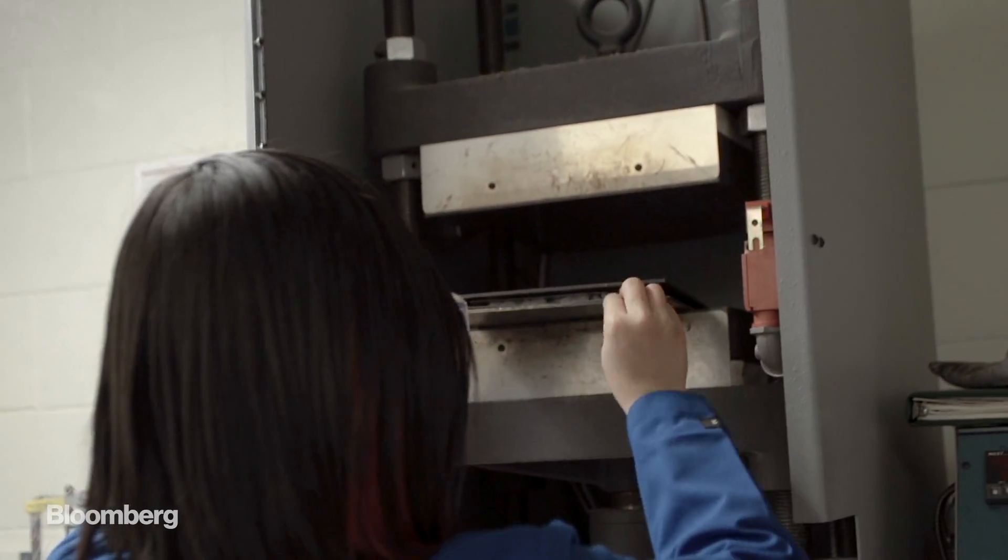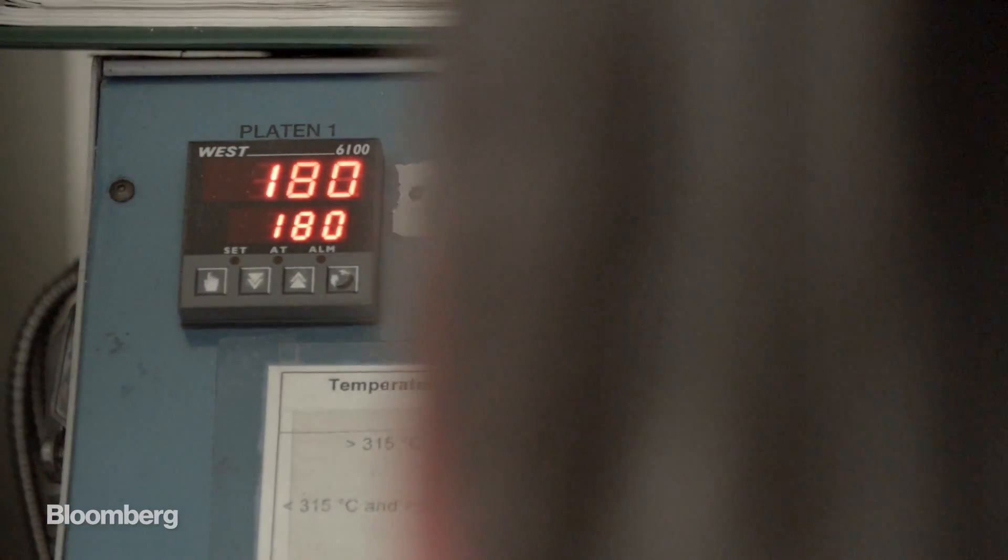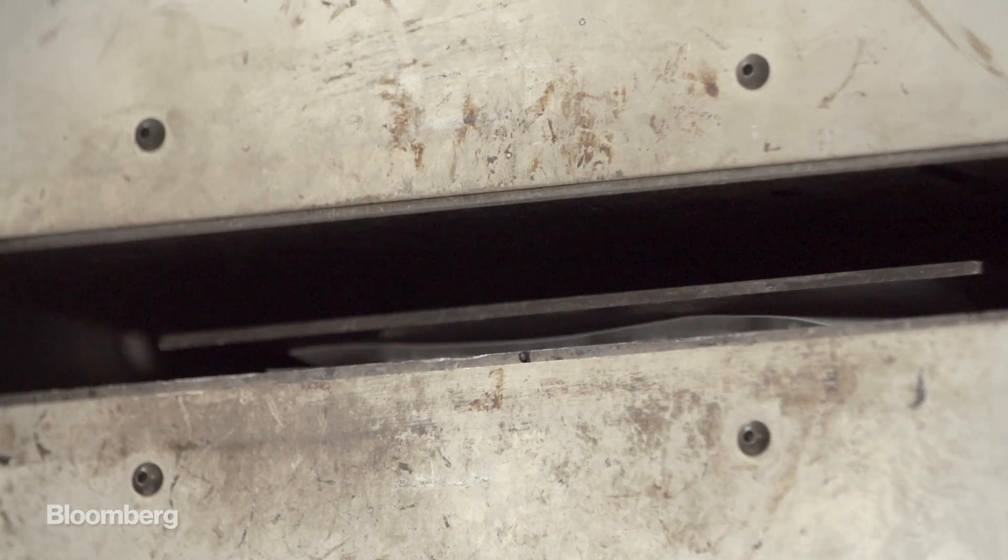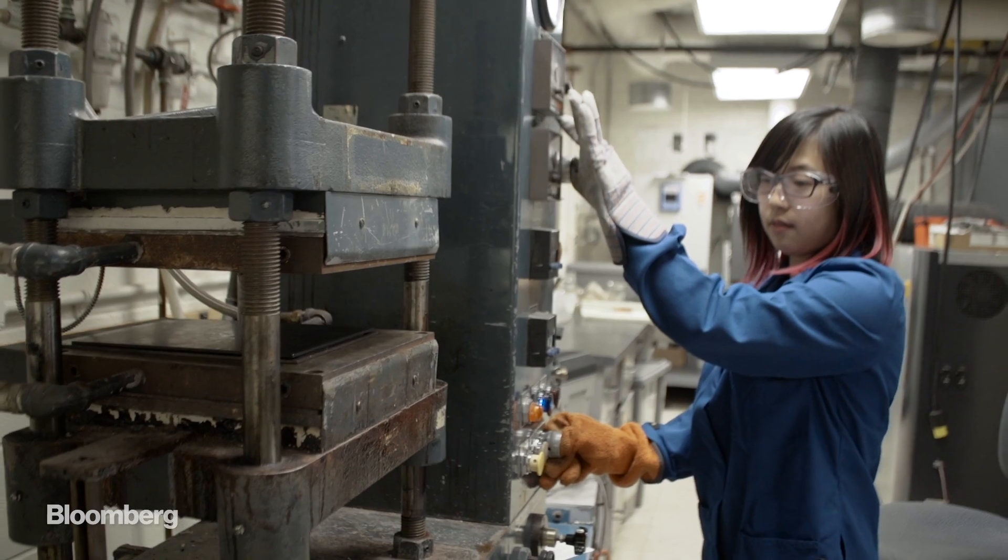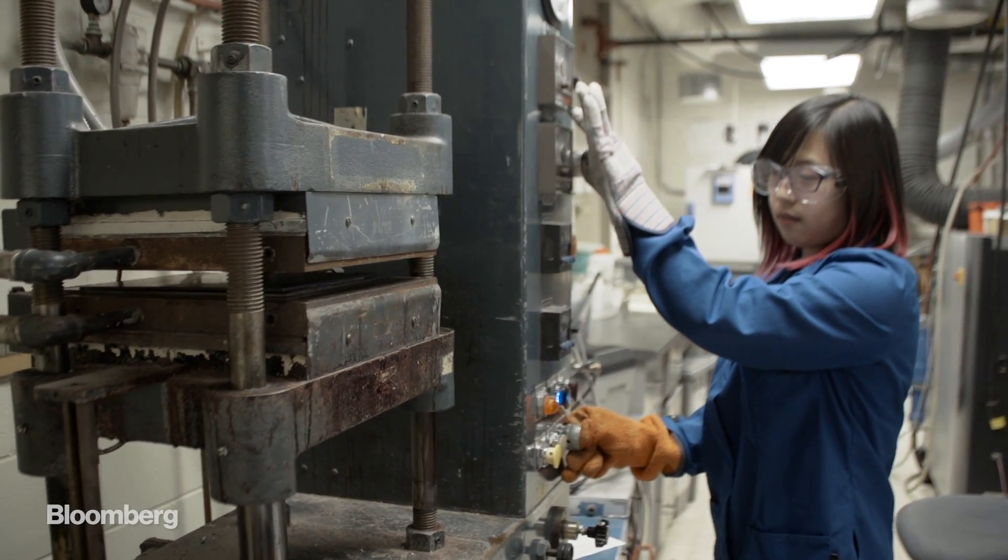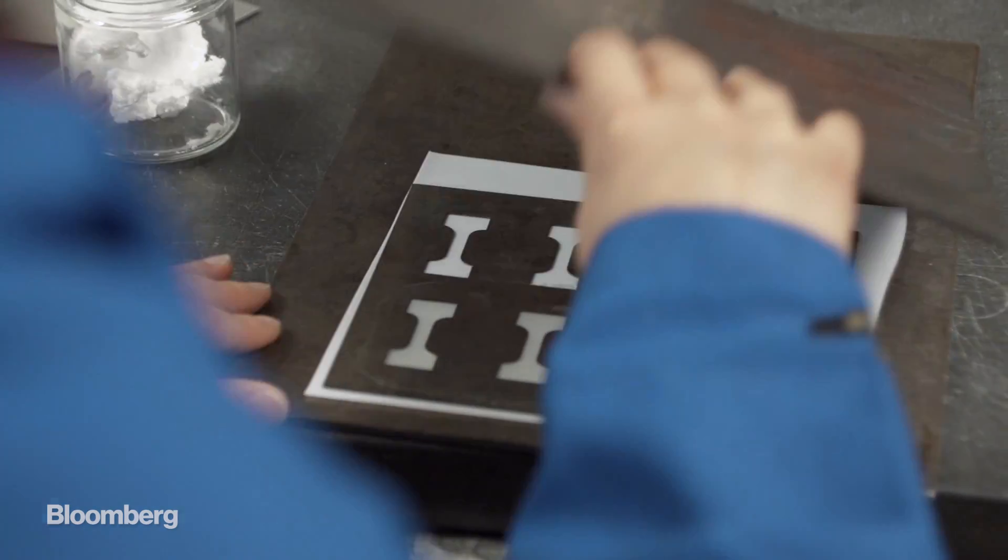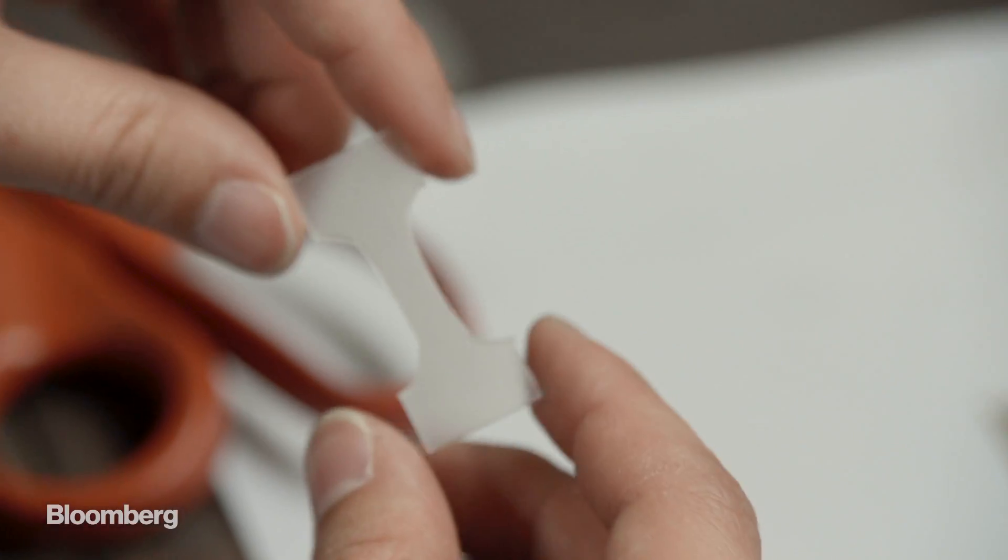Once we form some of the rubbers that we use today, we can't reprocess them. They can just be ground up and make playground rubber material, but this you can melt and reprocess and reuse it. And it's compostable.